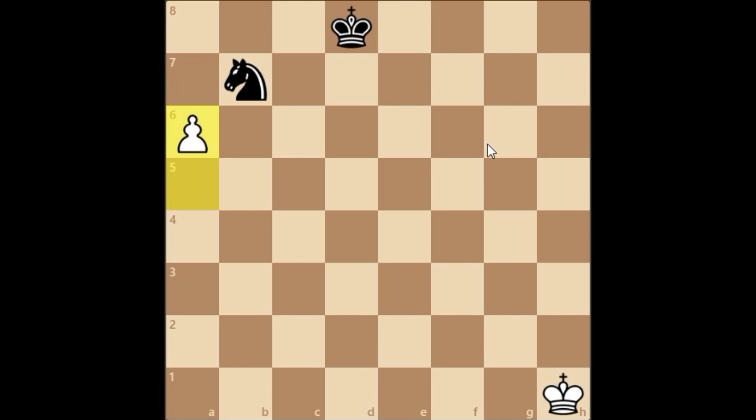Attacking the knight. Here, king c8 is played. It's not wise to take the knight because it's a drawn endgame.